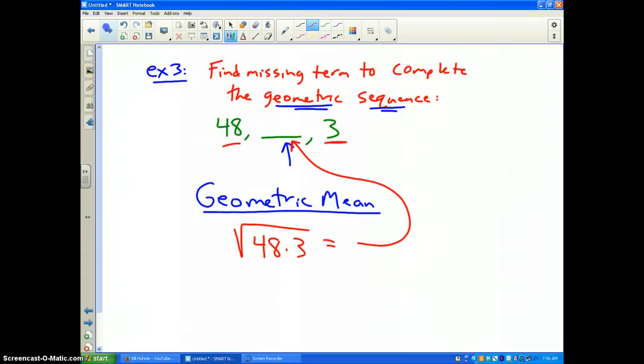Well 48 times 3 is 144, and the square root of 144 is 12. That's our number in between. And that should complete our geometric mean, which I believe it does, because 48 divided by 4 is 12 and 12 divided by 4 is 3. Constant pattern. And there we go.